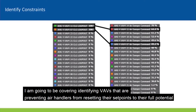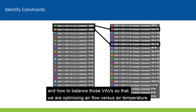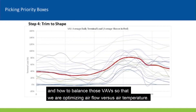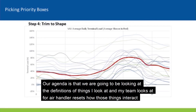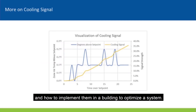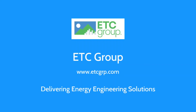I'm going to be covering identifying VAVs that are preventing air handlers from resetting their set points to their full potential, and how to balance those VAVs so that we're optimizing airflow versus air temperature. Our agenda is that we're going to be looking at the definitions of things that I look at and my team looks at for air handler resets, how those things interact, and how to implement them in a building to optimize a system.